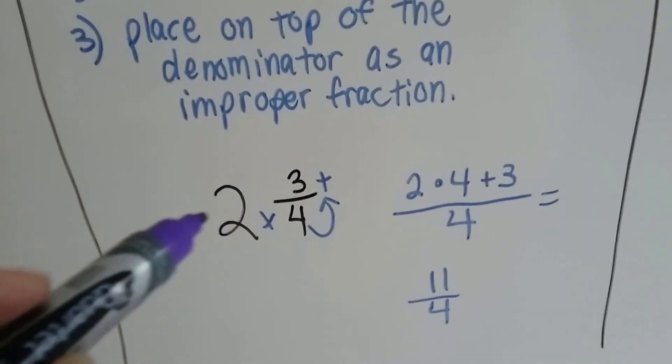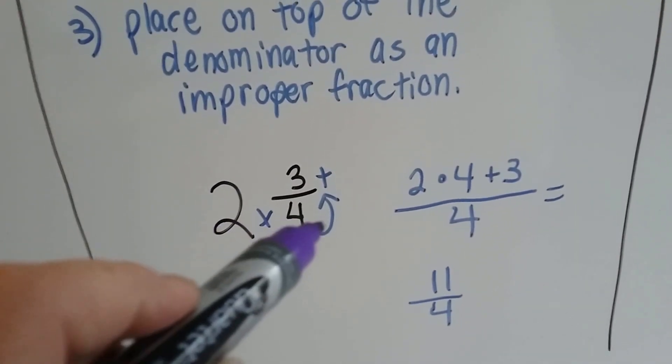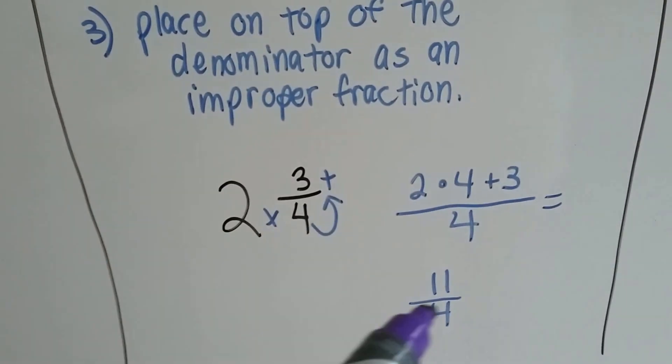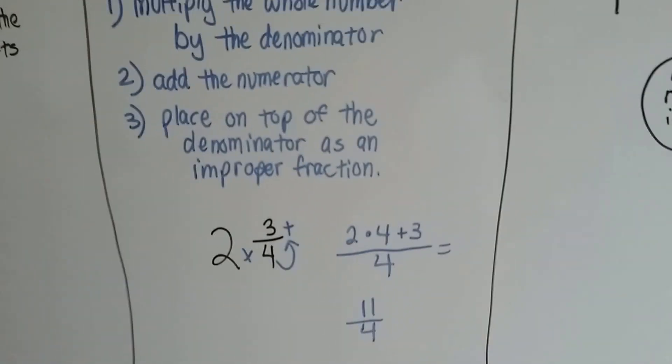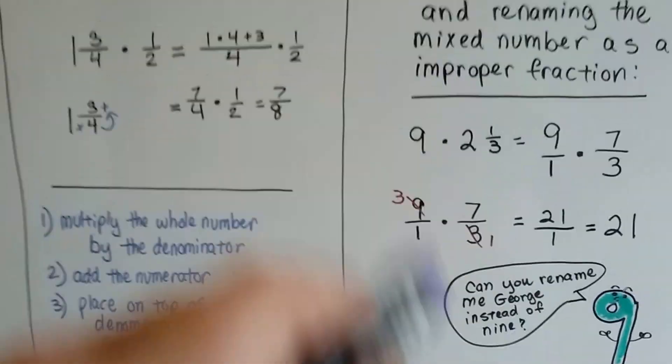If we had 2 and 3 fourths, we'd multiply 2 times 4 and add the 3, and we get 11 fourths and make an improper fraction. Then we can multiply it, or even use it to cancel out with cross dividing, right?